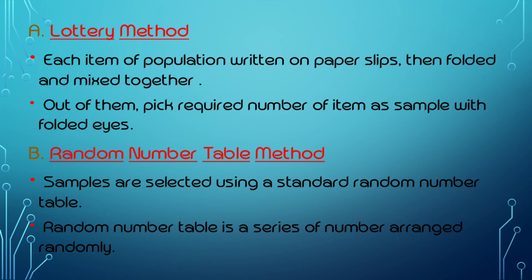Samples are selected using a standard random number table. A random number table is a series of numbers arranged randomly. At the time of attendance, names are assigned numbers which are randomly arranged in the table, and then one number is selected.